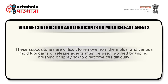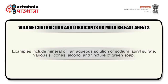Contraction can be eliminated by pouring a mass slightly above its congealing temperature into a mould warmed to about the same temperature. If adequate control of temperature is not feasible, the mould is overfilled so that excess mass containing the contraction hole can be scraped off. Cocoa butter adheres to suppository moulds because of its low volume contraction; hence cocoa butter suppositories are difficult to remove from moulds, and various mould lubricants or release agents must be used. These can be applied by wiping, brushing or spraying, and examples include mineral oil, aqueous solution of sodium lauryl sulphate, various silicones, alcohol and tincture of green soap.